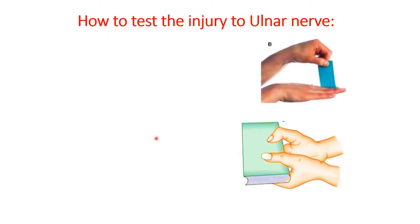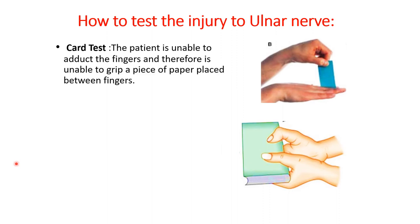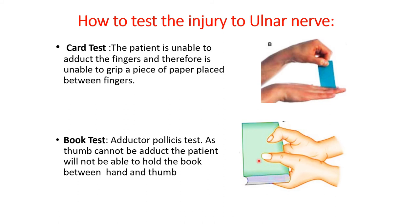Before moving to the wrist injury, let us see how to test for ulnar nerve injury. This is done by two tests. The first is the card test: a card is placed between two digits and the patient is asked to hold it tightly — they won't be able to because adduction of the digits is not possible due to loss of palmar interossei. The second is the book test: the person is asked to hold a book between the thumb and the hand, but because adductor pollicis — supplied by the deep branch of ulnar nerve — is paralyzed, they cannot hold it tightly.